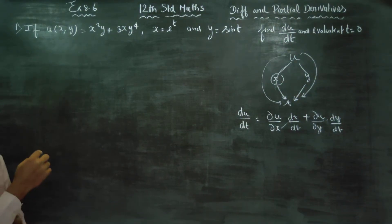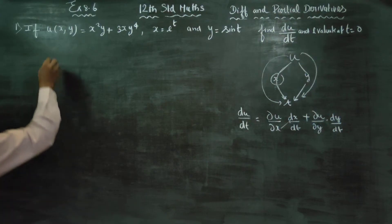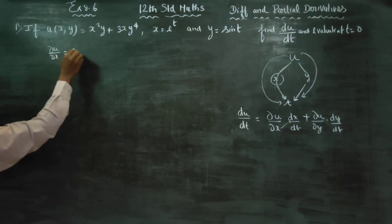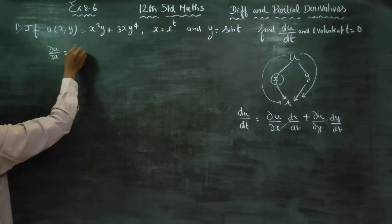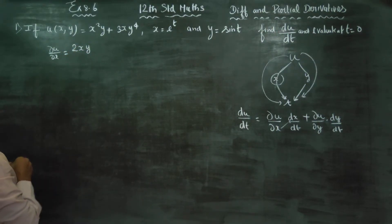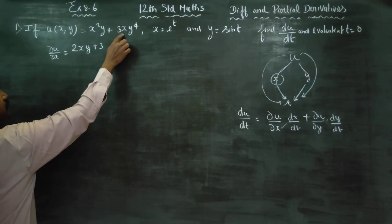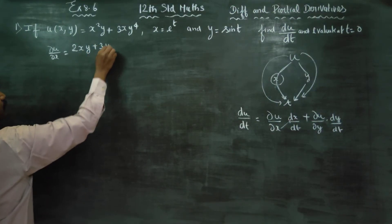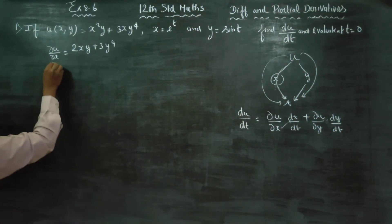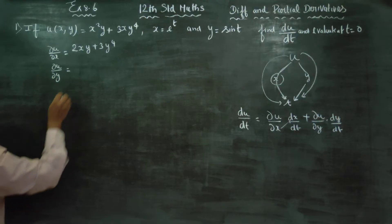First, I am going to find ∂u/∂x. Differentiating with respect to x, treating y as constant: the result is 2xy⁴. First differentiation is over.